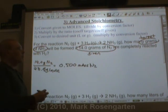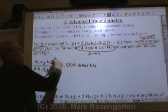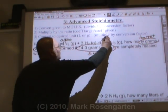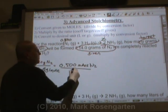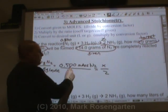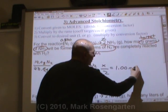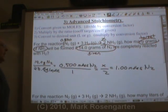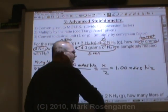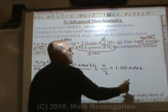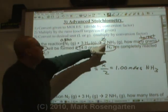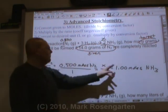Now look at the ratio: 1 N2 and 2 NH3. We have 0.500 moles of N2, so 0.500 over 1 equals x over 2. That gives us 1.00 moles of NH3. We used the mole ratio to find moles of NH3. And that makes sense — because it's a 1 to 2 ratio, whatever amount of N2 we have, we should have twice as much NH3. 0.5 to 1, so it works out beautifully.